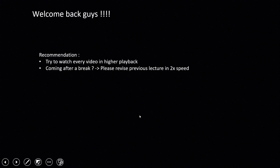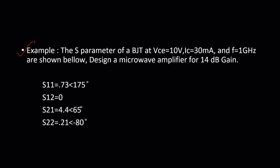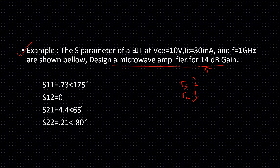Welcome back. In this video we will continue from our last video where we started designing a microwave amplifier with a 14 dB gain. Designing a microwave amplifier means deciding on our gamma S and gamma L. In my last video I already derived the required gamma S and gamma L values for a 14 dB gain. In this video our agenda is to simulate this example and verify we are getting a 14 dB gain.